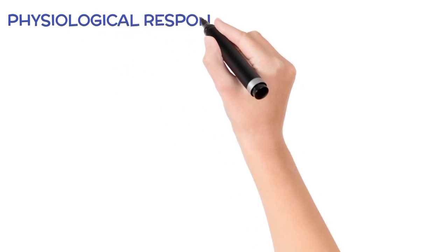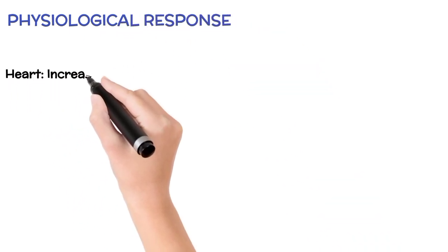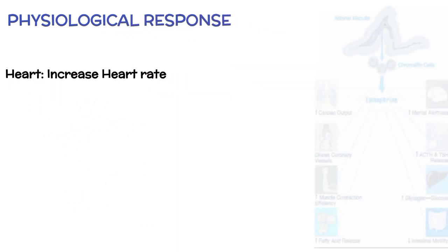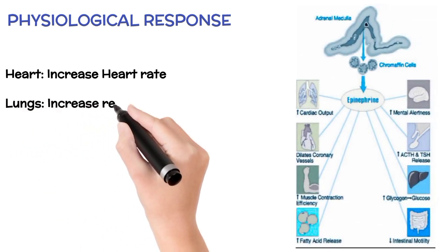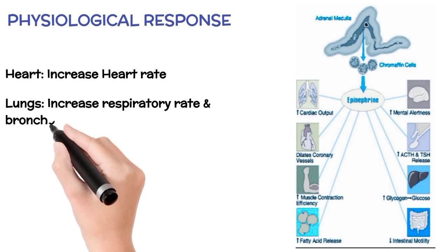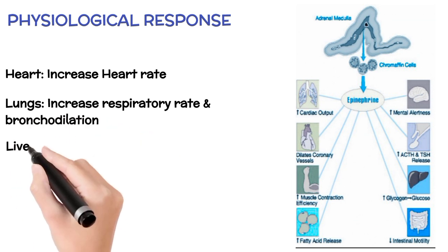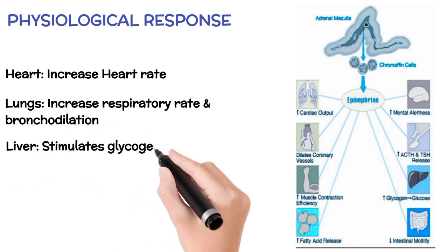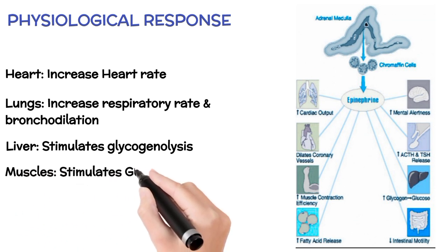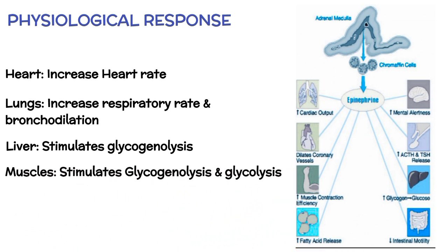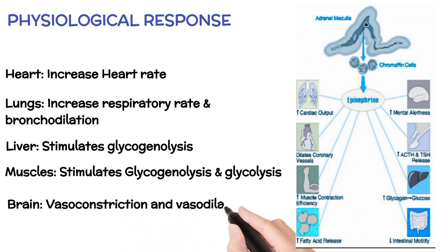Physiological Response of Adrenaline — Heart: increases heart rate, contractility, and conduction across the AV node. Lungs: increases respiratory rate and causes bronchodilation. Liver: stimulates glycogenolysis. Muscles: stimulates glycogenolysis and glycolysis. Brain: causes both vasoconstriction and vasodilation. Systemically: triggers lipolysis and muscle contraction.